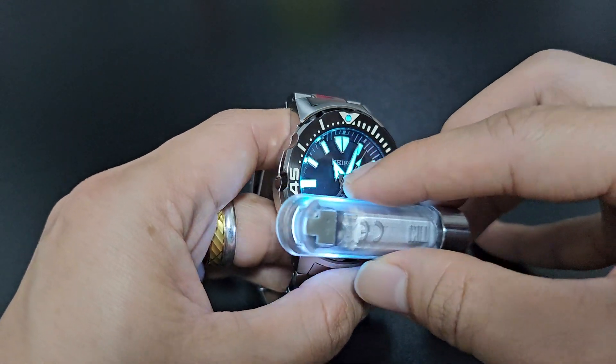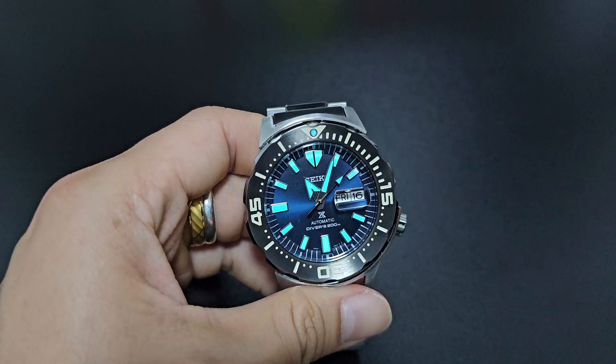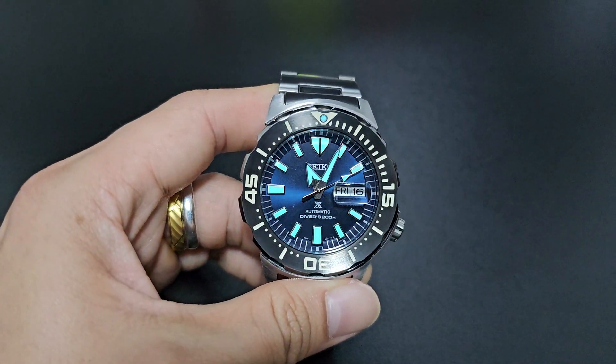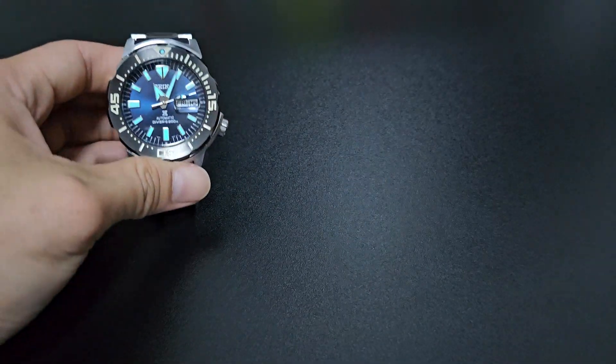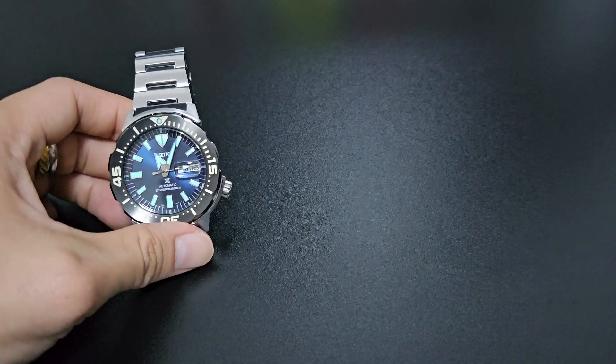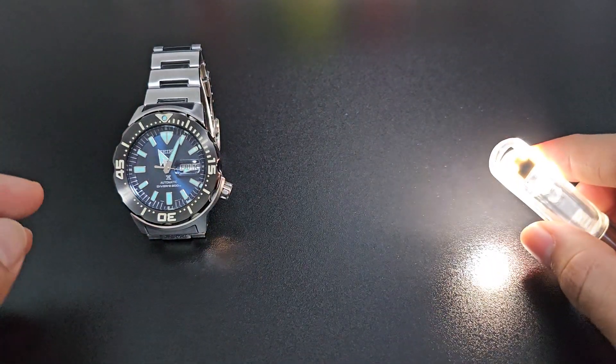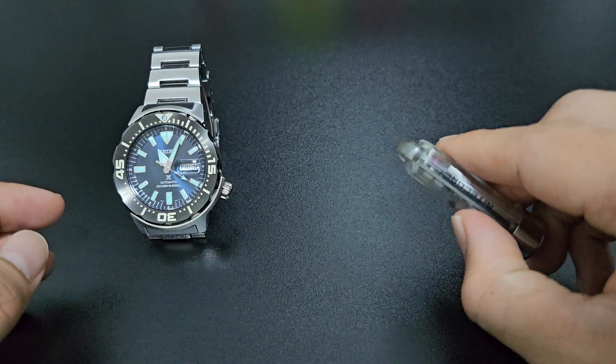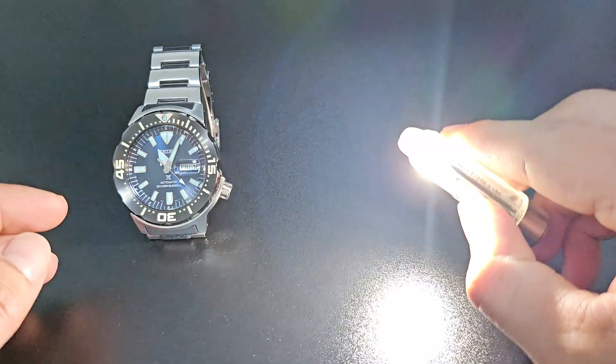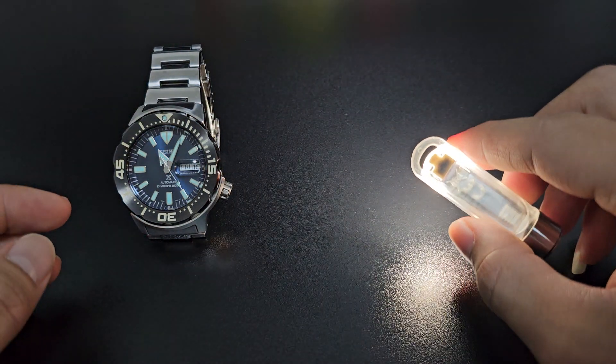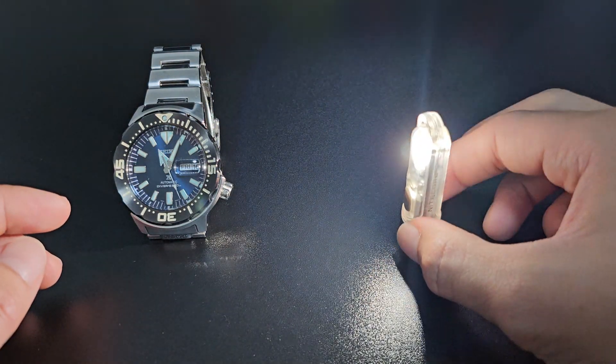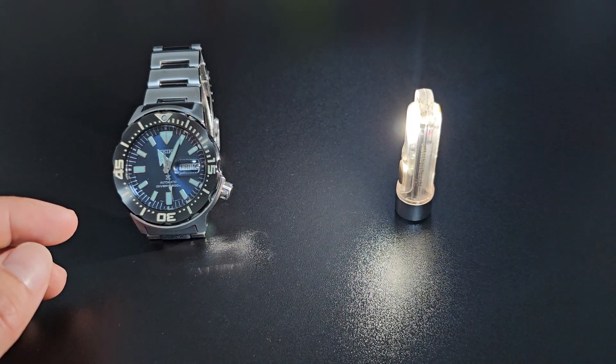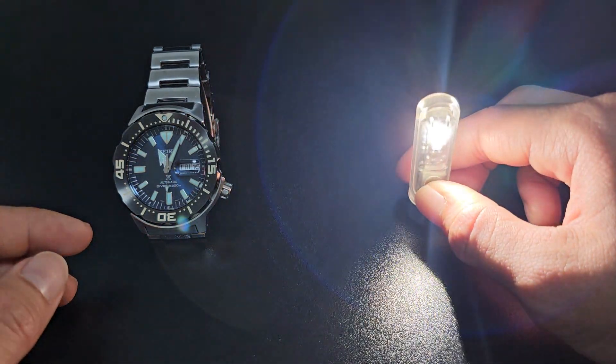The next mode is the blinking mode. So in order to access it, you do a triple press again, and then you press one more time. Okay, so this is the lantern mode. You can just activate it and put it here. And to access the blinking mode, you just press one more time, and this light will go into the blinking mode.